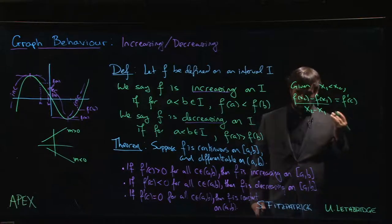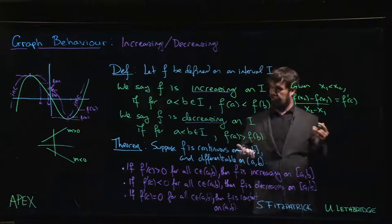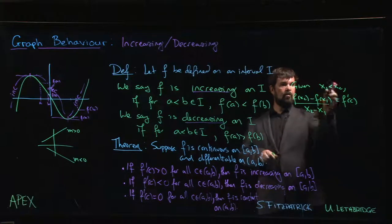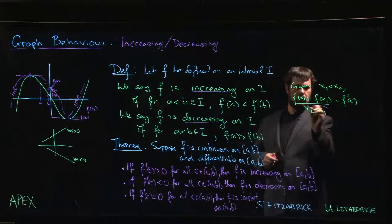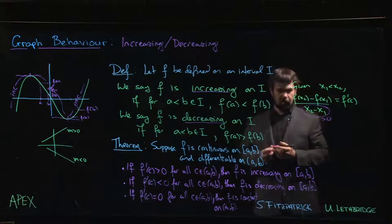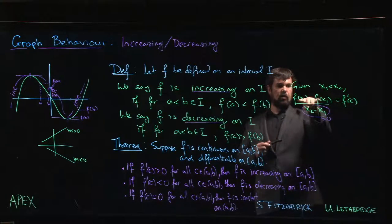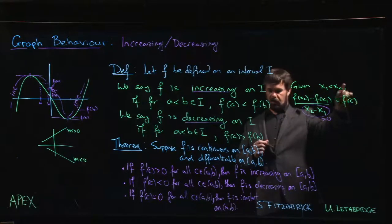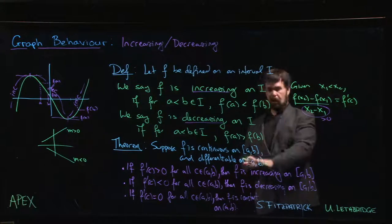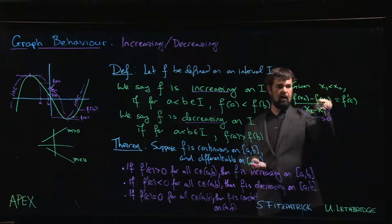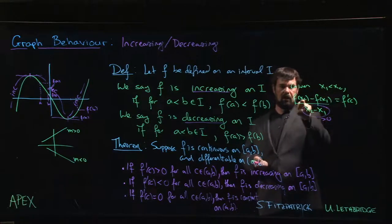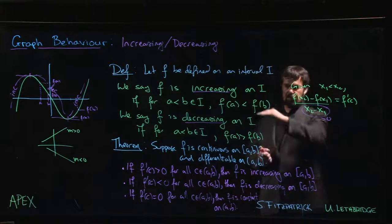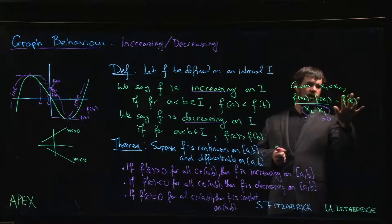...I know that's got to be equal to f'(c) for some c between x1 and x2. And since I'm assuming that x1 is less than x2, I know that this denominator is always positive here, which means that the numerator has the same sign as f'. So if f' is positive, then f(x2) - f(x1) is positive, and that means that f(x2) is bigger than f(x1), and we have an increasing function.